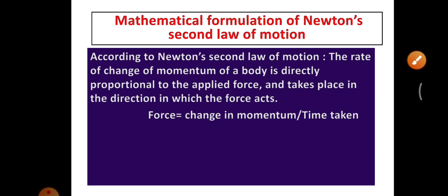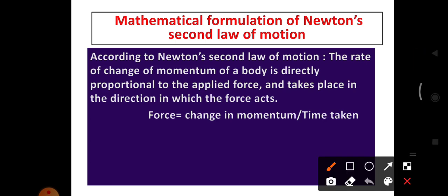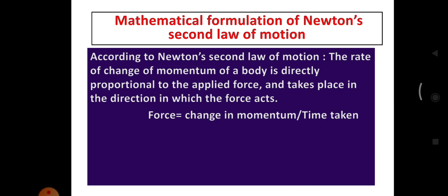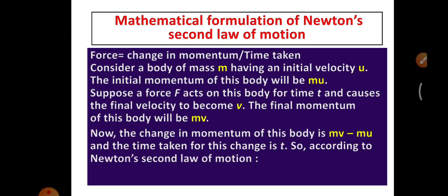According to Newton's Second Law of Motion, the rate of change of momentum of a body is directly proportional to the applied force. So we can write: Force = change in momentum divided by time. It takes place in the direction in which the force acts — the direction of force and momentum are the same.